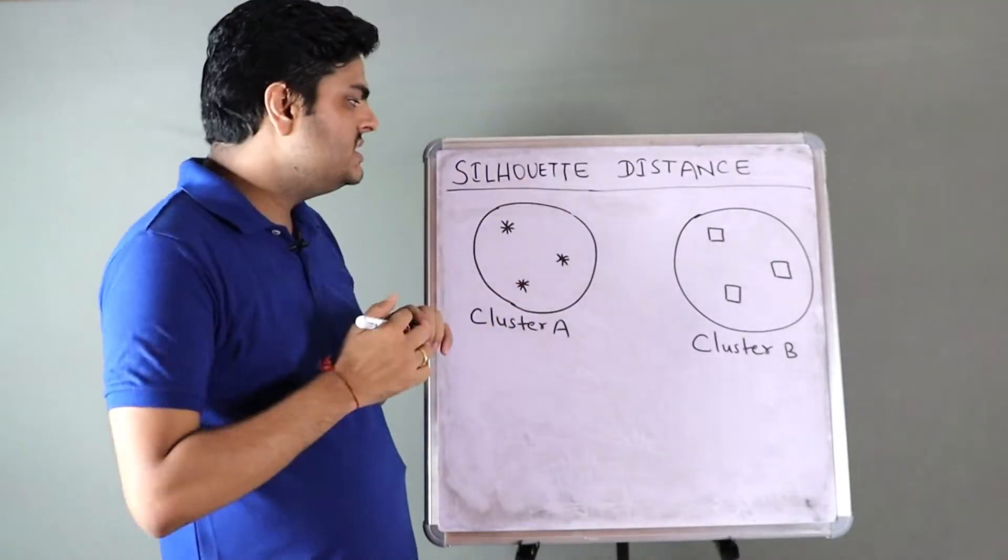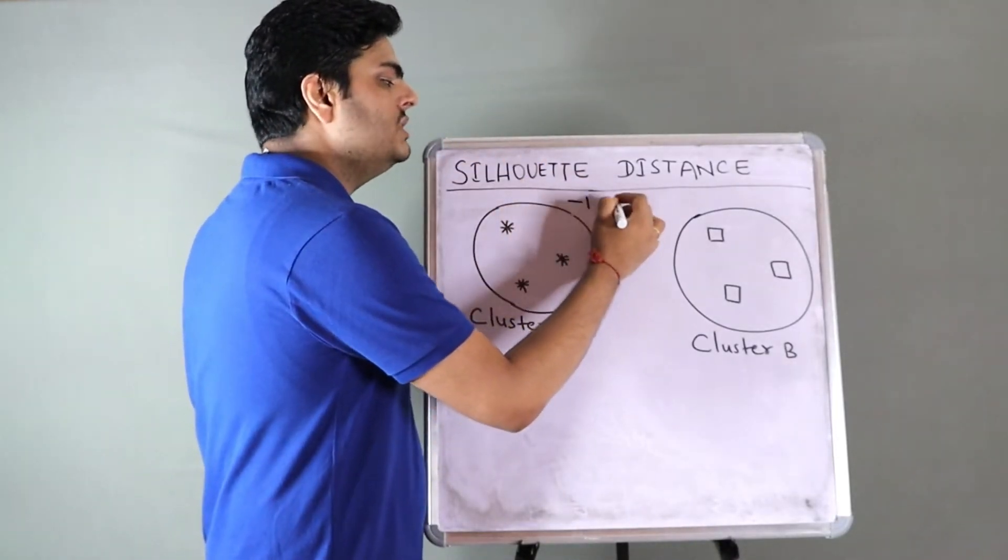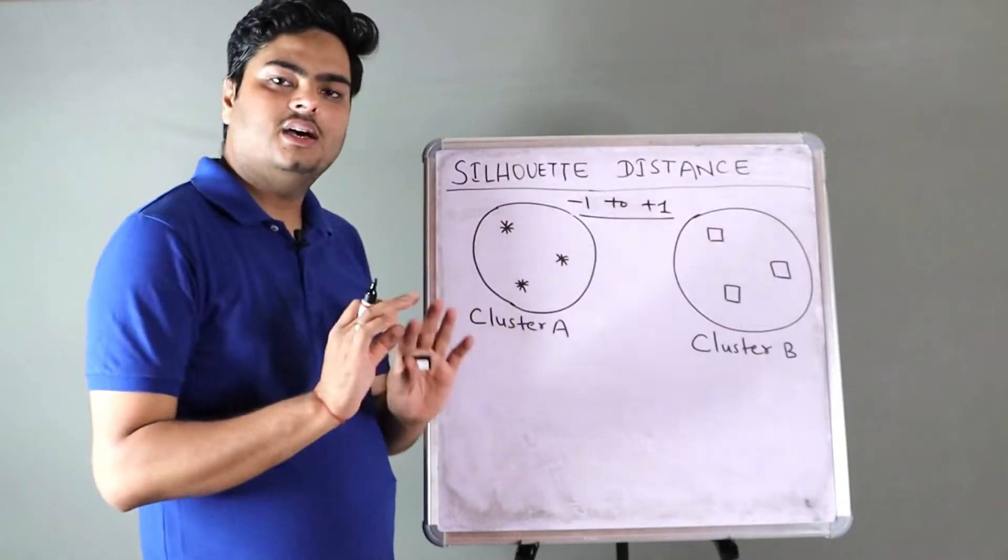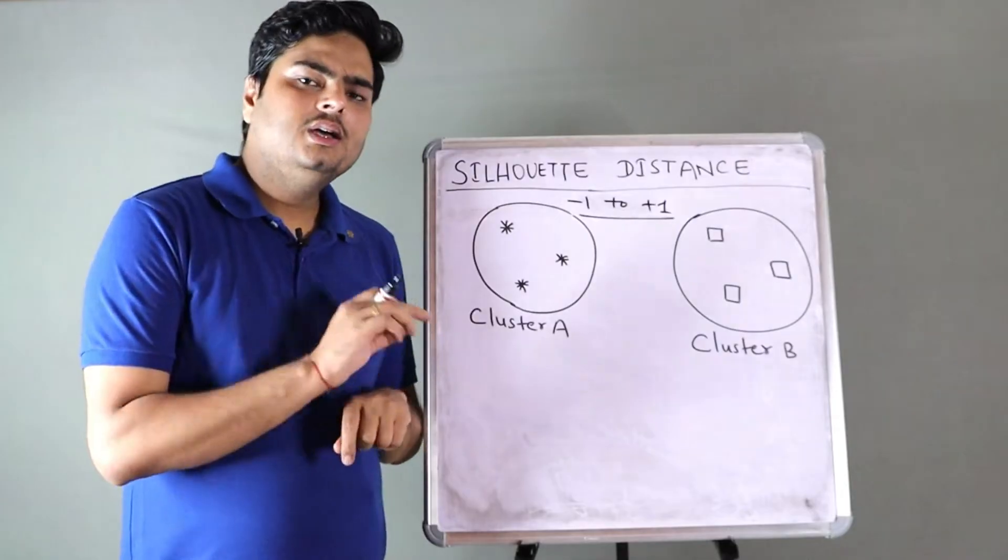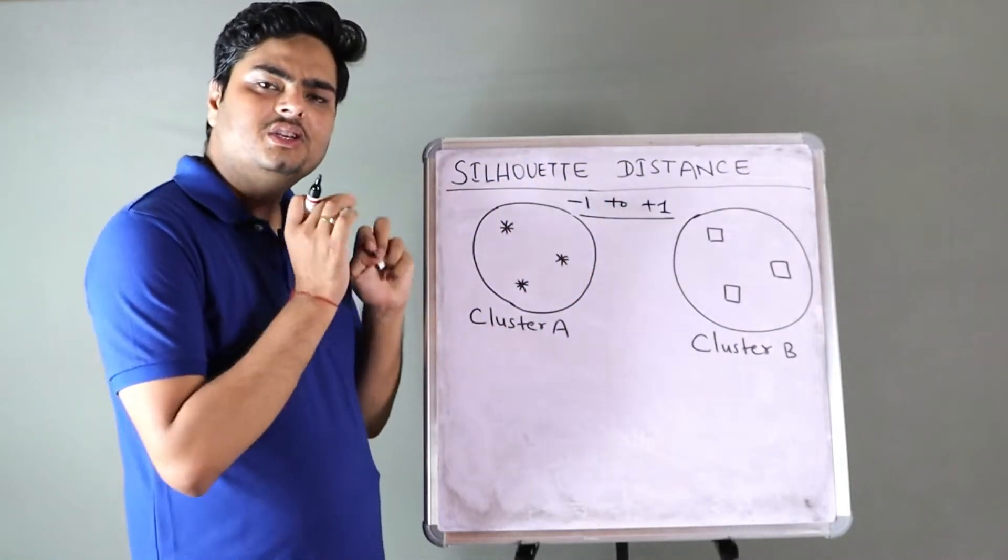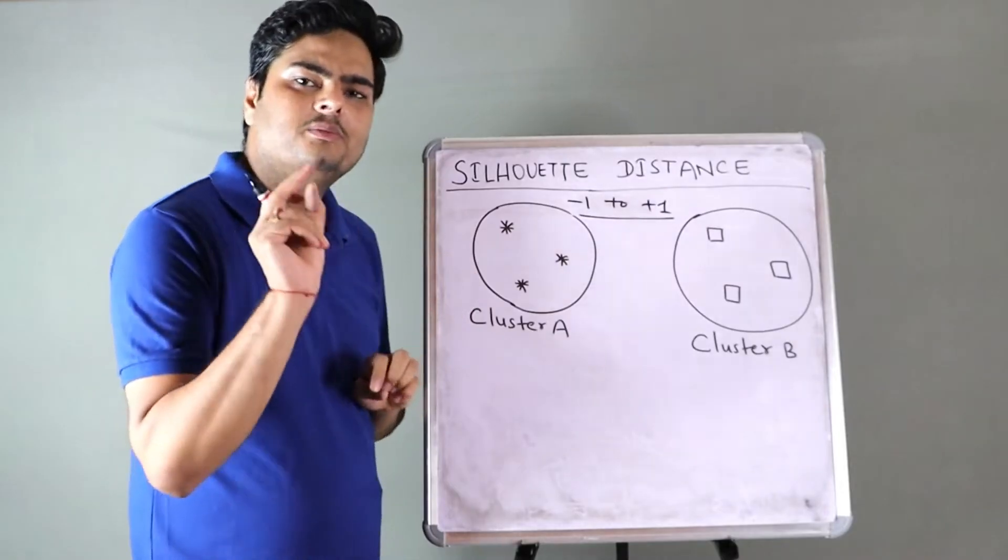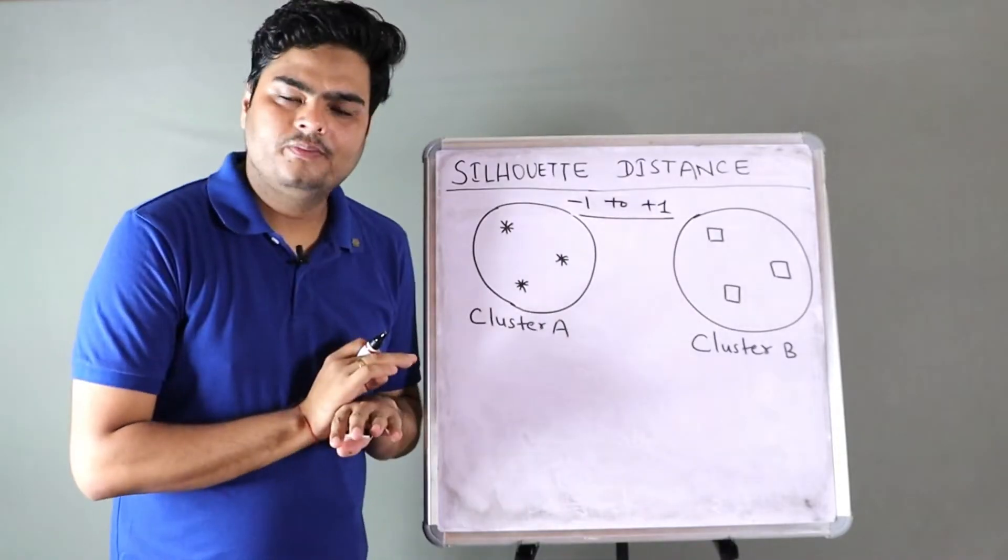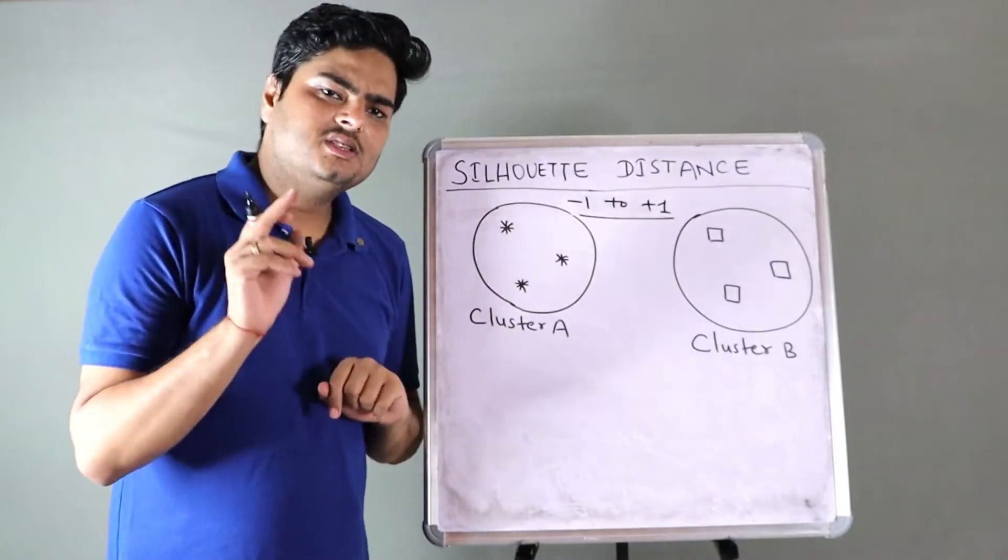Based on those two things that I told just now, there is a coefficient defined that is known as silhouette coefficient or silhouette distance. Based on this, which ranges from minus one to plus one, we say how good our clusters are formed.